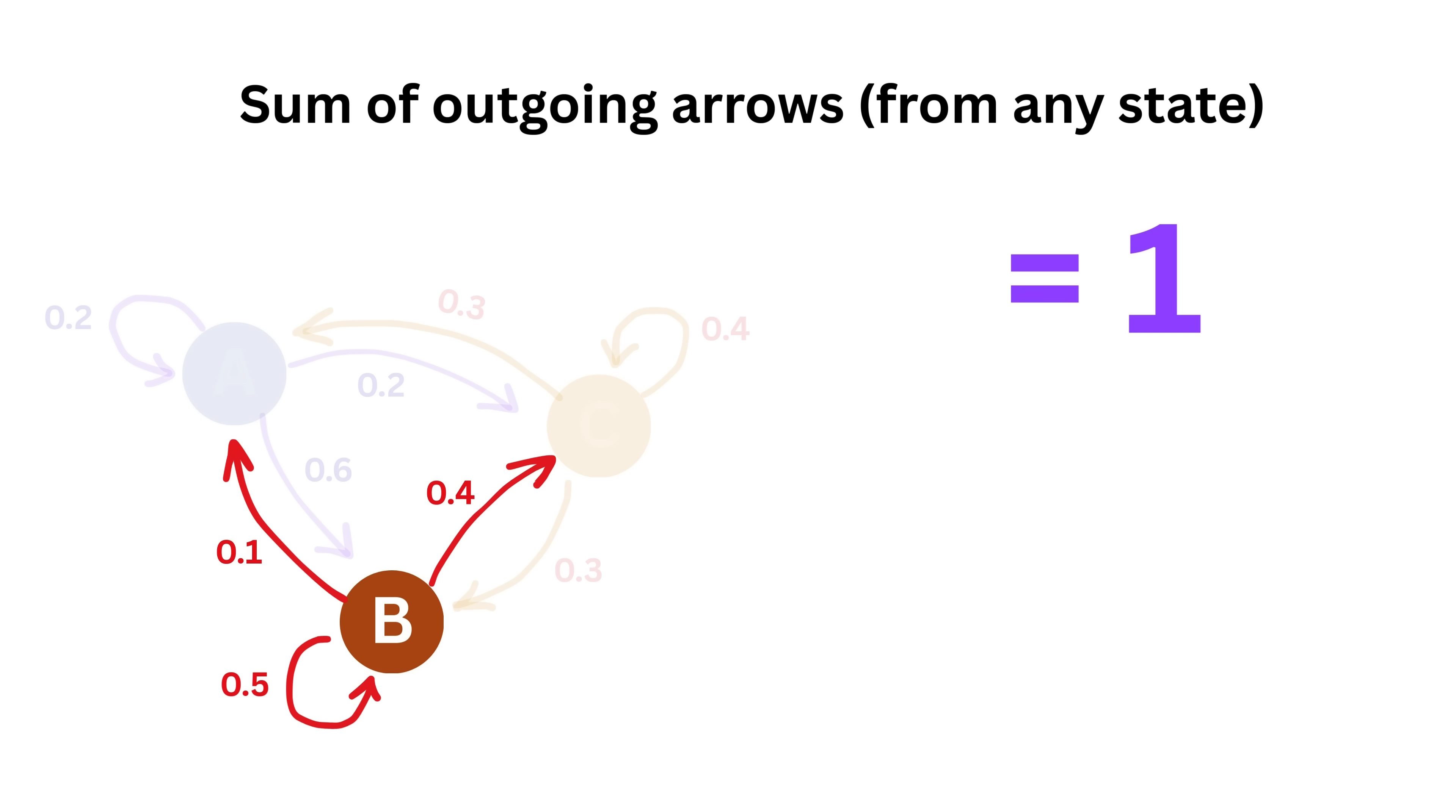Right? This makes sense because these numbers represent probabilities and the chance of going somewhere from a given page must always be certain, or one.